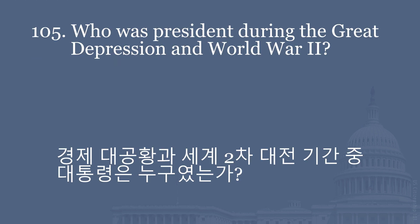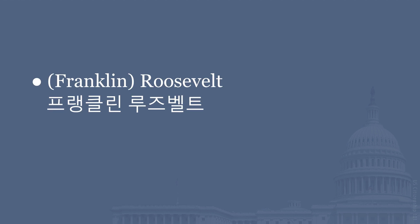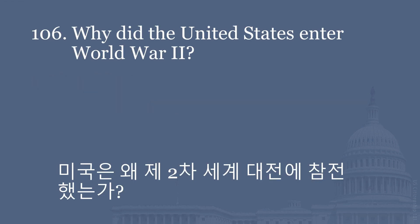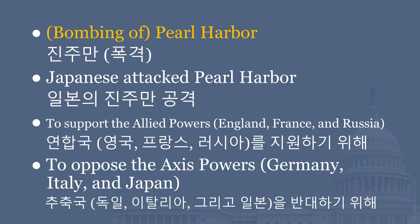Who was President during the Great Depression and World War II? Franklin Roosevelt. Why did the United States enter World War II? Bombing of Pearl Harbor. To support the Allied Powers — England, France, and Russia. To oppose the Axis Powers — Germany, Italy, and Japan.